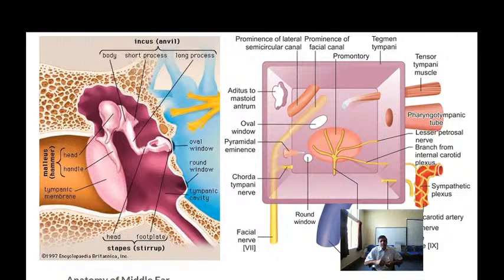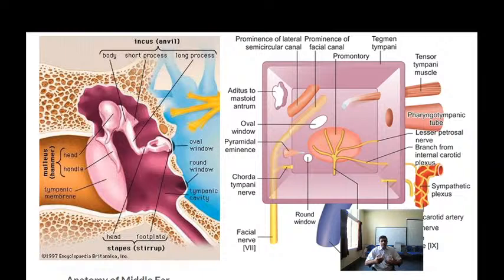There is a branch of the facial nerve called the chorda tympani which travels in the middle ear cavity between the malleus and the long process of the incus. In the posterior part there is a small eminence called the pyramidal eminence, where you have the stapedius muscle with its tendon. This tendon is inserted into the neck of the stapes and controls its movement — if there is a loud sound, the stapedius muscle contracts and pulls the foot plate of the stapes away from the vestibular region.